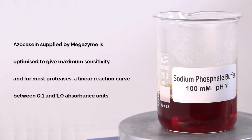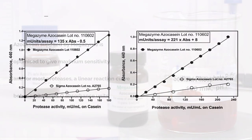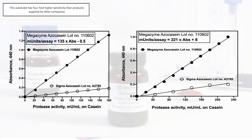Azo casein supplied by Megazyme is optimized to give maximum sensitivity and, for most proteases, a linear reaction curve between 0.1 and 1 absorbance units. This substrate has a 4-fold higher sensitivity than products supplied by other companies.